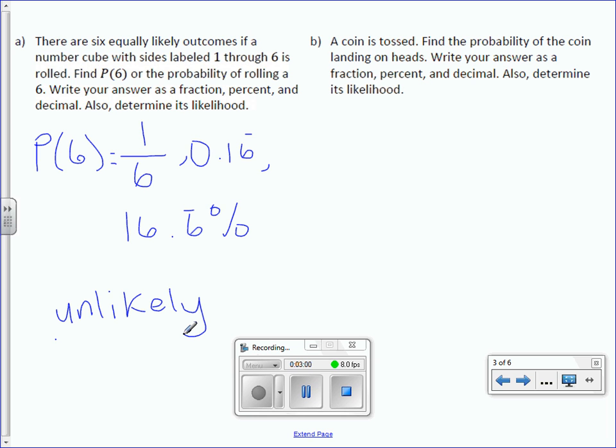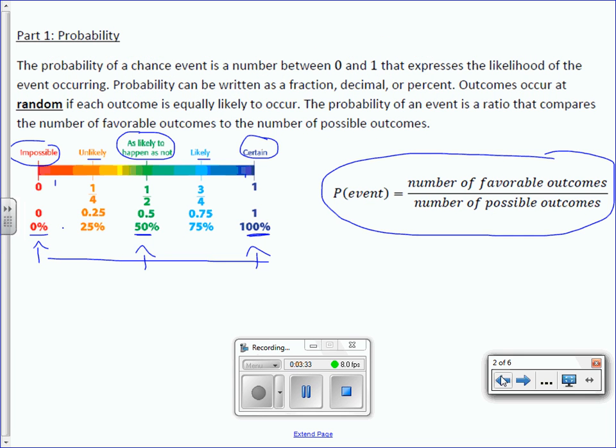Letter B. A coin is tossed. Find the probability of the coin landing on heads. So probability of heads. Write your answer as a fraction, percent, and decimal. Also determine its likelihood. Well, if you're flipping a coin, just a regular coin, there's only one side that's heads out of two total sides. So the probability is 1 out of 2. As a decimal, that is 0.5 multiplied by 100, the percent is 50%. If we look at our likelihood, it's exactly 50%, which means that it is as likely to happen as not.